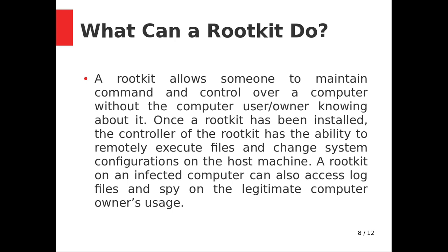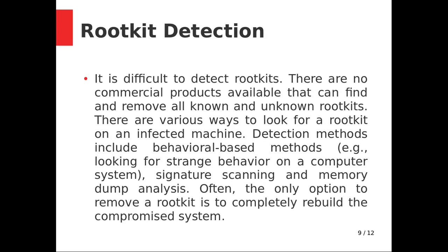Rootkit detection is difficult. There are no commercial products available that can find and remove all known and unknown rootkits. Various ways exist to look for a rootkit on an infected machine. Detection methods include behavioral-based methods — looking for strange behavior on a computer system — signature scanning, and memory dump analysis. Often the only option to remove a rootkit is to completely rebuild the compromised system.